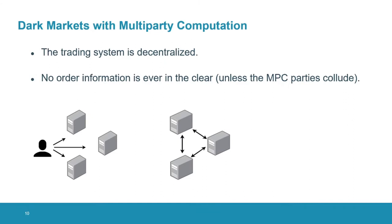In this work, we address this problem with the operator by using multi-party computation, or MPC. With MPC, what we get is basically a decentralized trading system where the order information is never in the clear. There will be a set of computational parties who will process the auction, but not even these parties will actually see the order information. Of course, for real-world deployment, it is also important to know who could play these computational parties.